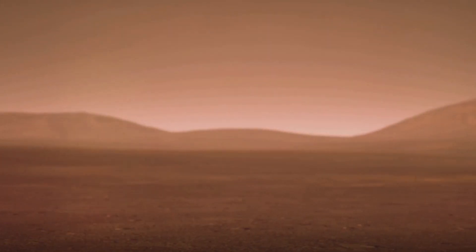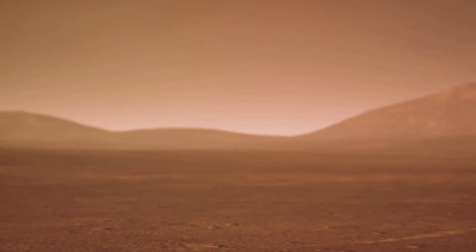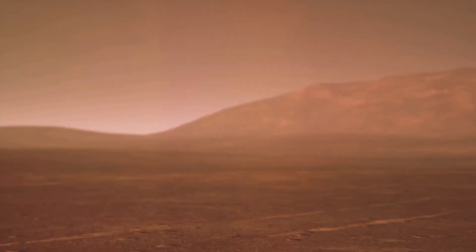Why did Mars, a once vibrant world, die while Earth, its solar sibling, flourished? The answer may lie in the size of these two planets and their associated cooling rates.